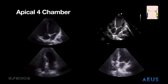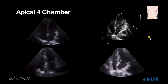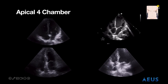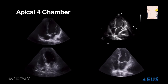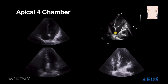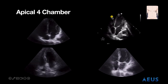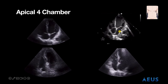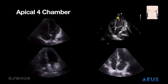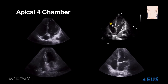Next we have our apical four chamber view. This is done right around the patient's PMI with the indicator pointing towards the left shoulder or axilla. We have the left side of the heart on one side and the right side on the other — left atrium, mitral valve, left ventricle, right atrium, tricuspid valve, and right ventricle.